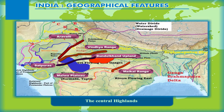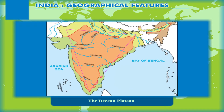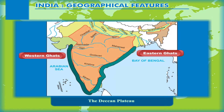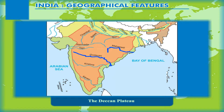The Deccan Plateau is the triangle-shaped plateau that lies to the south of the Narmada and forms the larger portion of the peninsular plateau. Its borders are marked by the Western Ghats in the west and the Eastern Ghats in the east. The general slope of the plateau is from west to east, and rivers like Mahanadi, Godavari, Krishna, and Kaveri originate in the Western Ghats and meet the Bay of Bengal after dissecting the plateau from west to east.